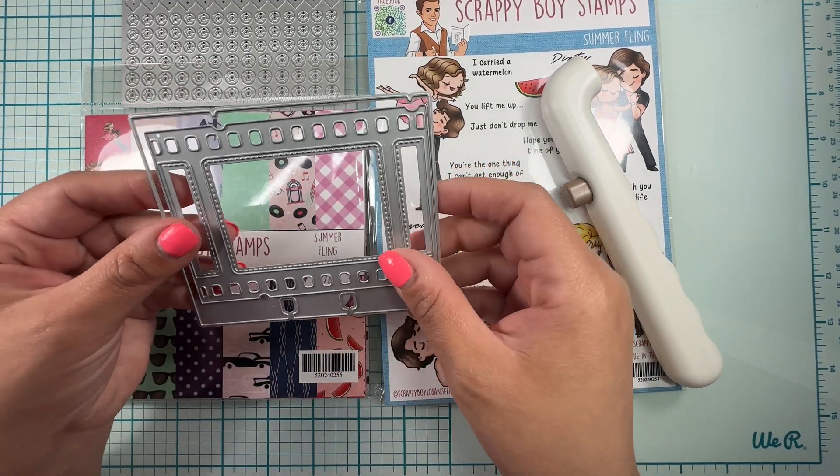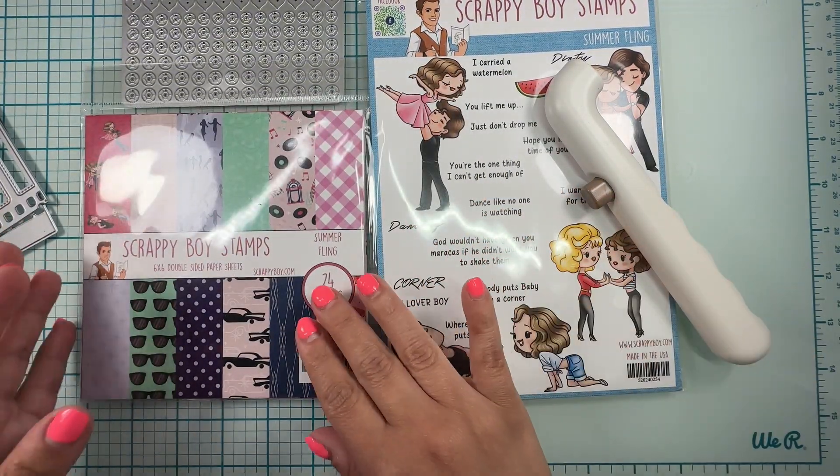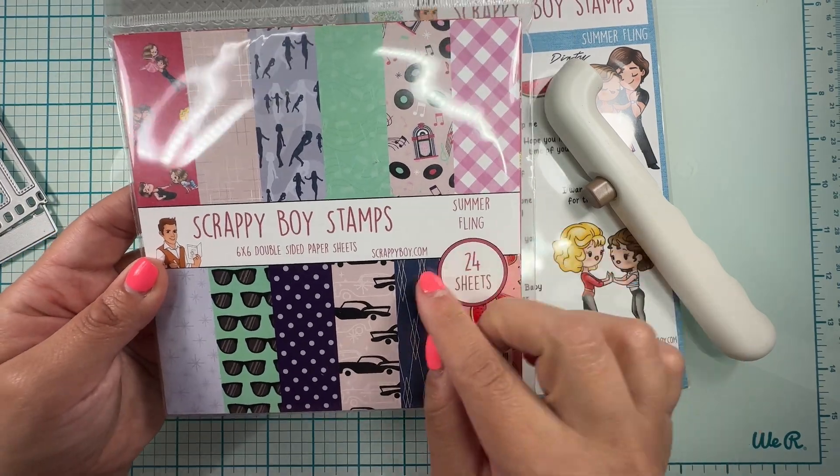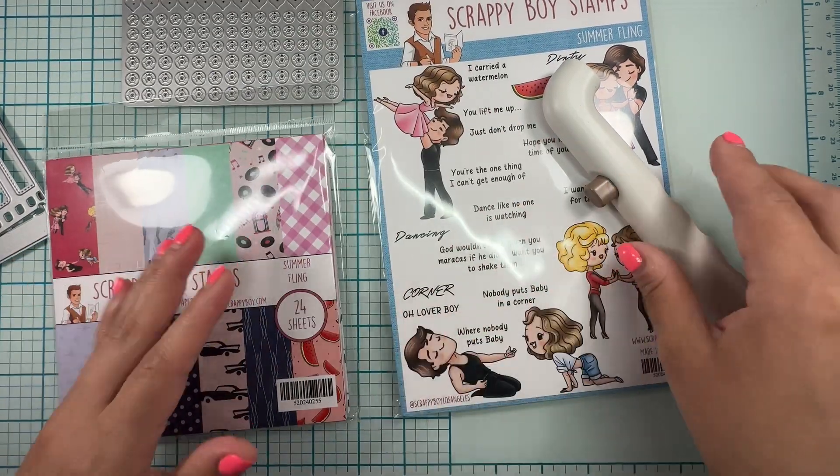We're gonna be using this die - it's an older die but it's still in the shop - the filmstreet memory decks card die set and the summer film paper pack. I mean, this right here, I love it!